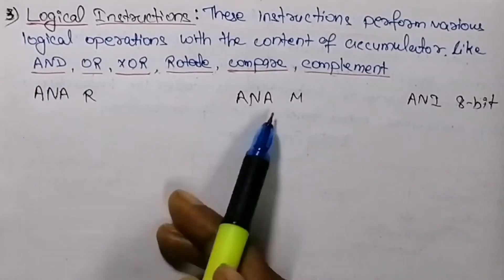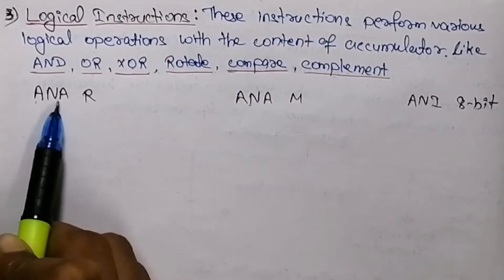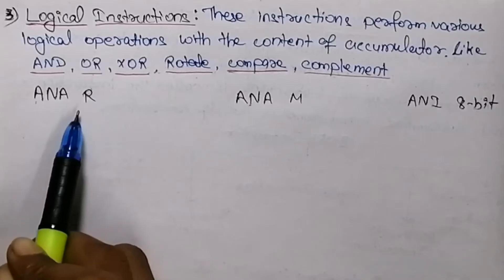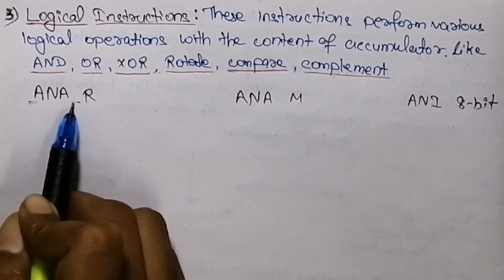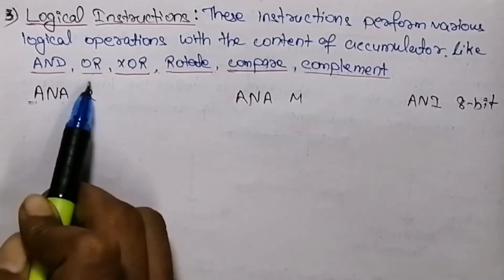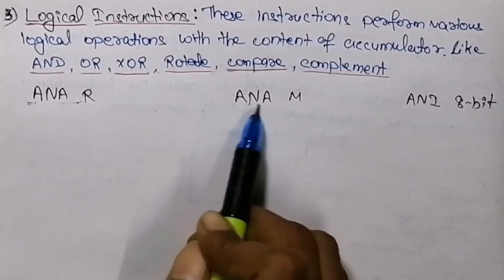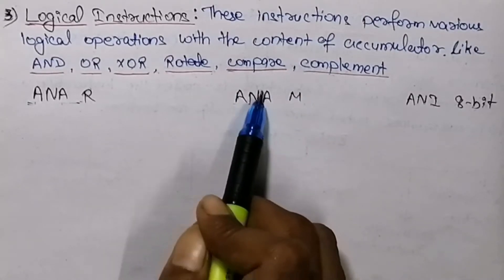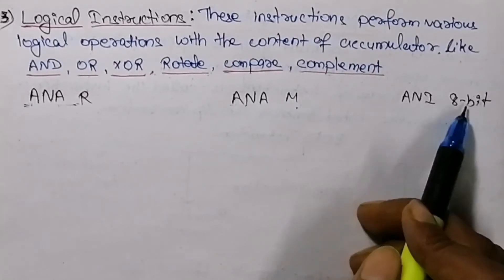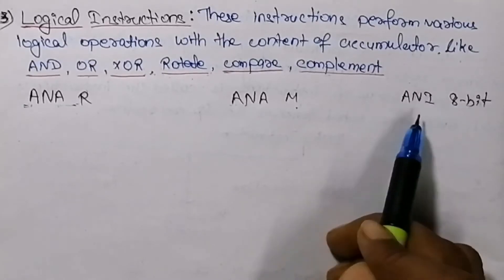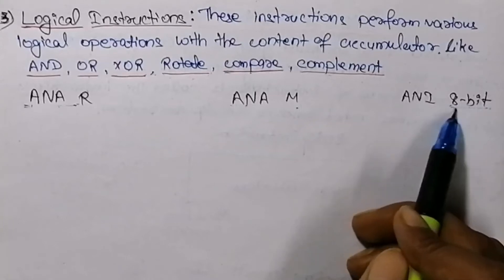There are three instructions for performing the AND operation. First, ANA r — where r is any register in the 8085 microprocessor — performs the AND operation between the accumulator content and the register content. ANA M performs the AND operation between the content of the accumulator and the content of memory. ANI 8-bit performs the AND operation between the content of the accumulator and an 8-bit data supplied directly.